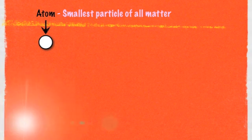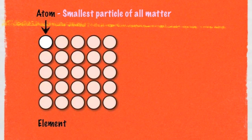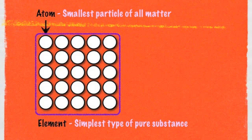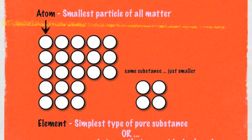So how is the atom related to elements? That white circle represents an atom, and if that's an atom, then this is an element. One way we can define an element is that it's the simplest type of pure substance — something that only contains one type of particle. All of the atoms in that picture are the same. Another way to define an element is any substance that cannot be broken down into a different substance. As you can see, I've just broken off a piece of that element, and it's still that same element because it's made up of the same types of atoms.